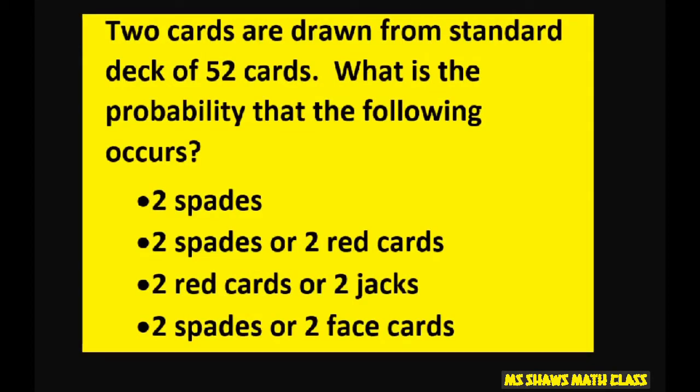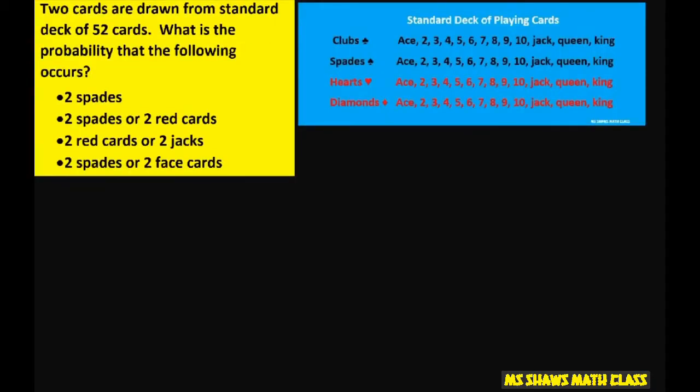Hi everyone. Two cards are drawn from a standard deck of 52 cards. We're going to find the probability that these four events occur. So the first thing we're going to do is find two spades.